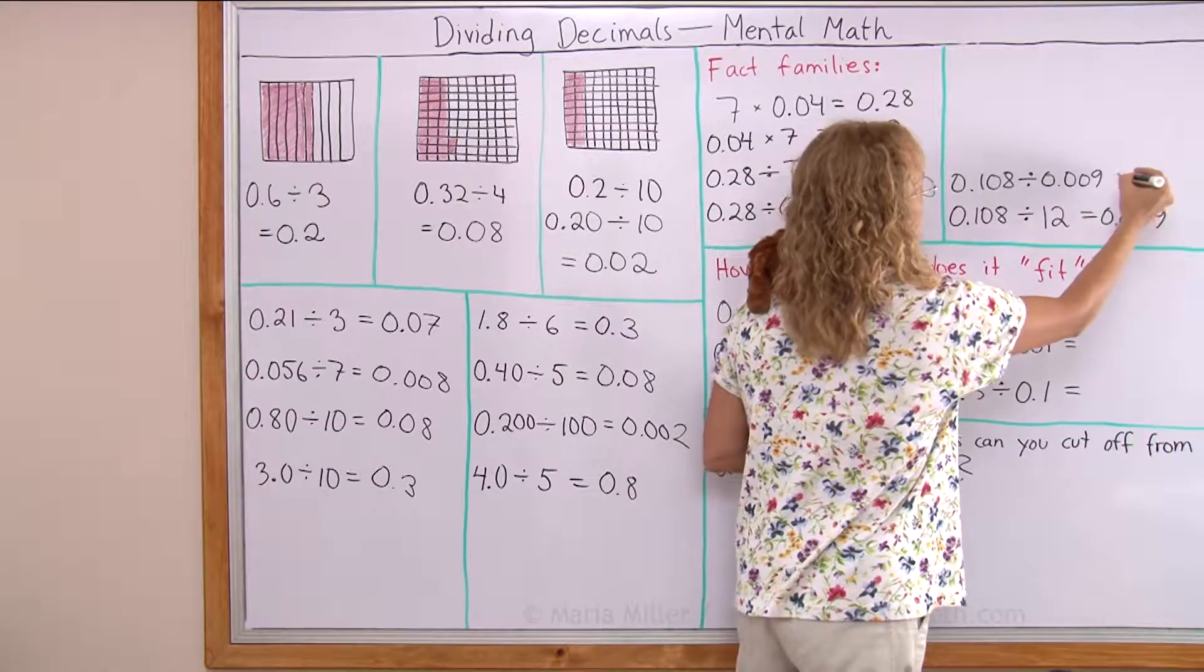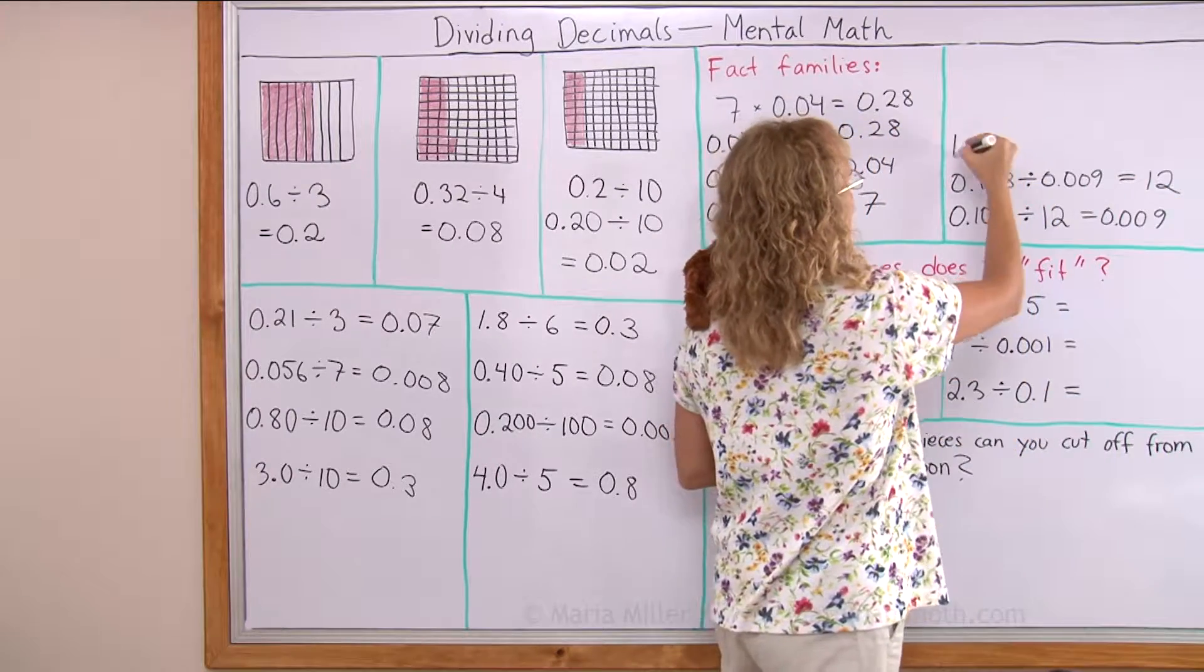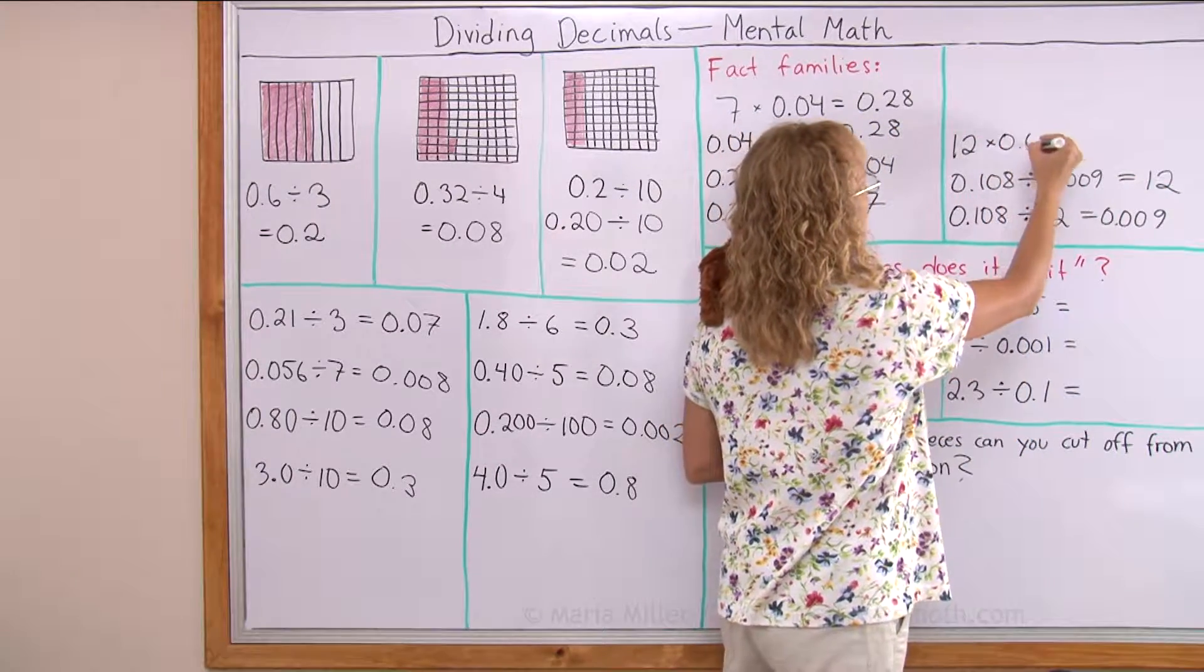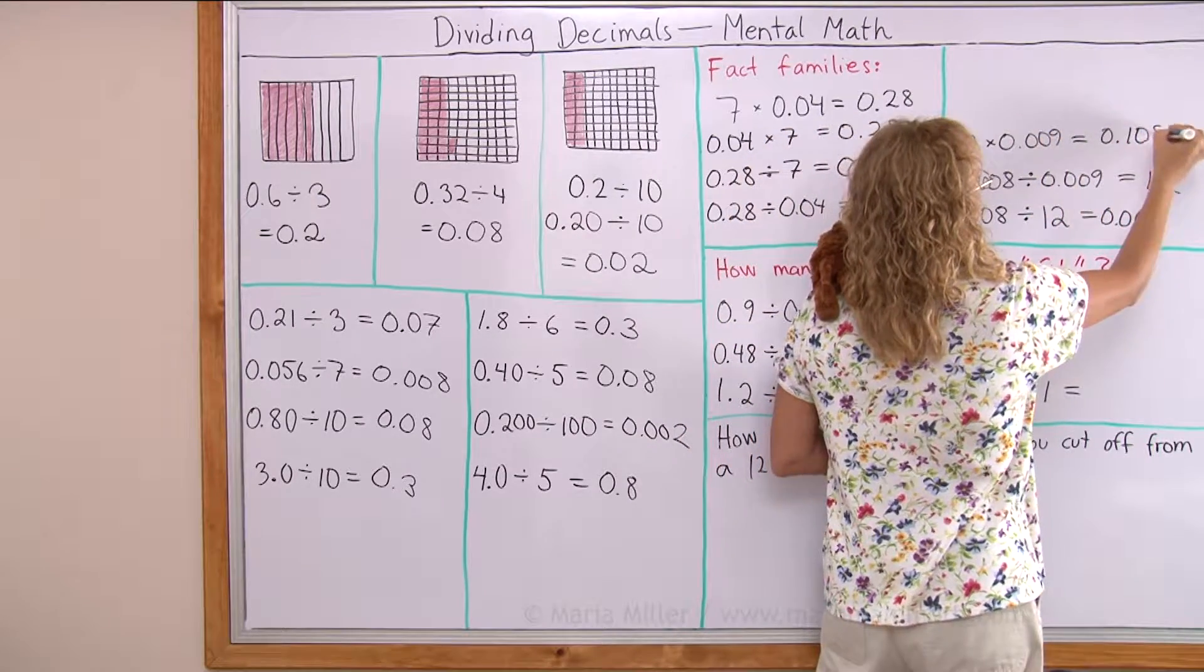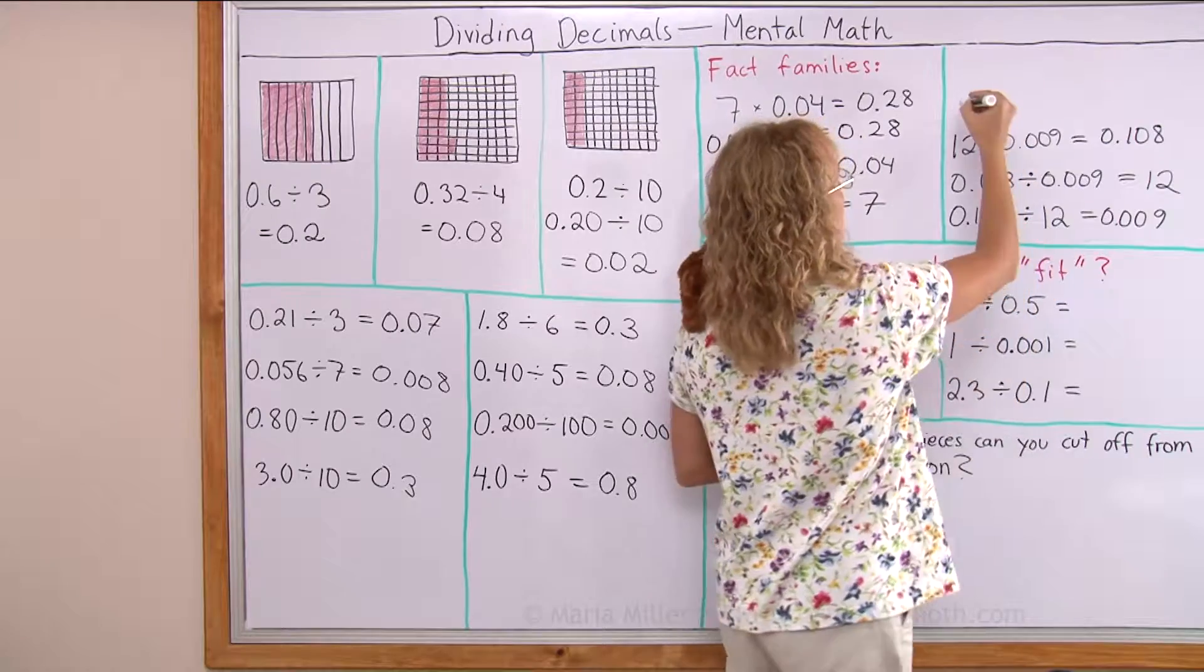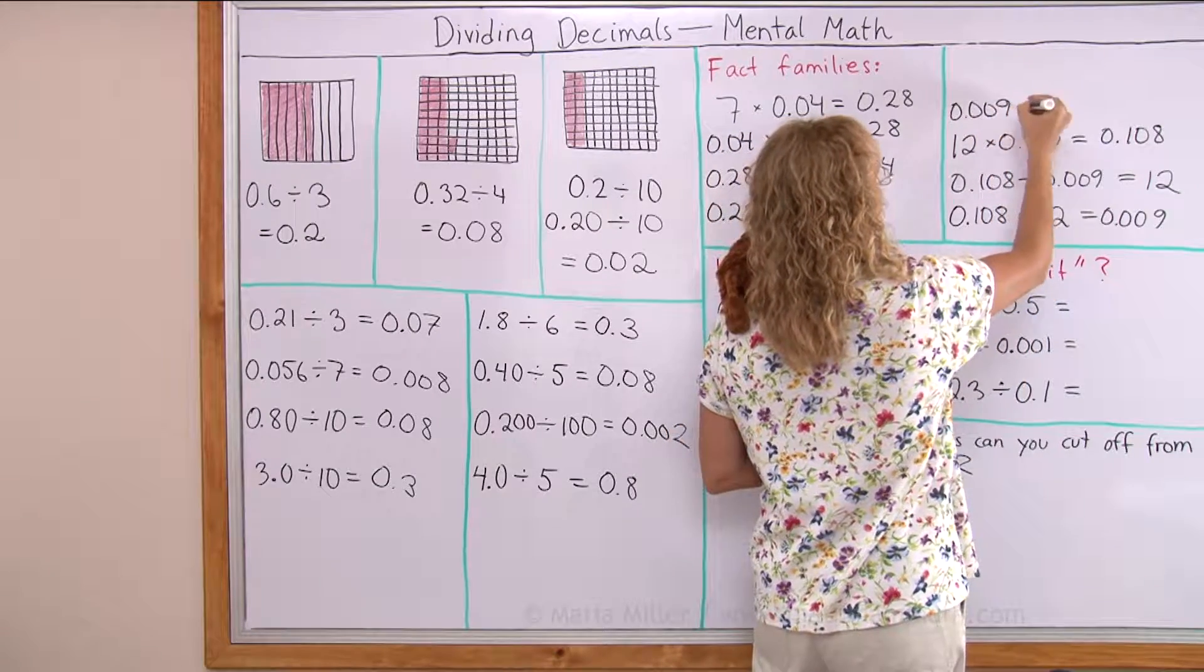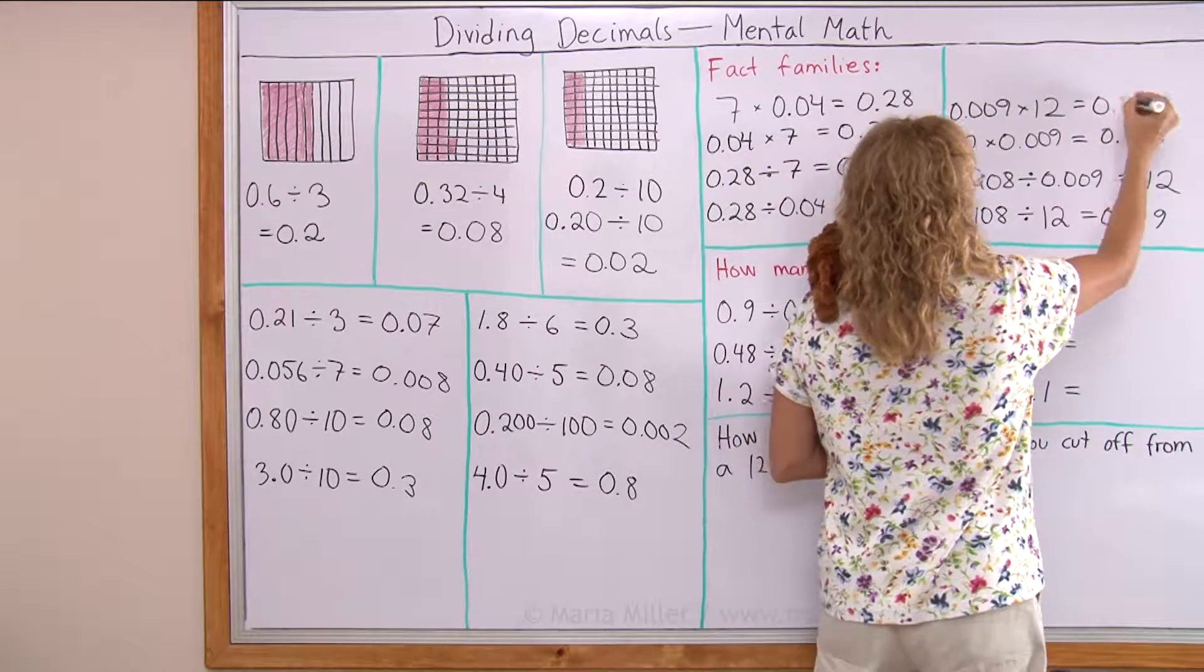And then the two multiplications. 12 times 9 thousandths is 108 thousandths, and then just the other way around here.